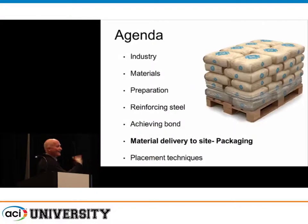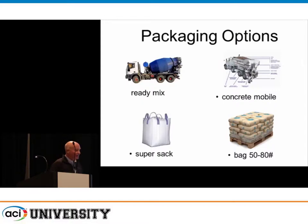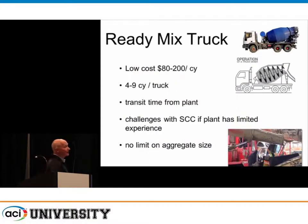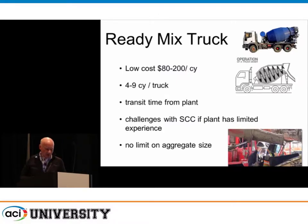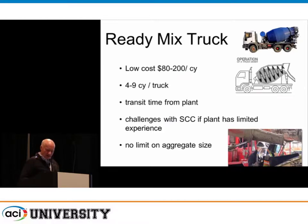Now, packaging. You've prepped the surface, the steel is clean, and you know how you're going to bond. How do you get your repair material out there? You can do it in ready mix, concrete mobiles, super sacks, or bags — each has advantages, disadvantages, and costs. Most repairs are done with ready mix. There's a huge portion of that $35 billion done with ready-mix trucks — $80 to $200 a cubic yard. Self-consolidating concrete is relatively new and beautiful with those admixtures, but sometimes it's hard to get a ready-mix plant to deliver just one or two truckloads. There's no limit on aggregate size — I can get three-quarter-inch, inch, or inch-and-a-half stone for deeper repairs.